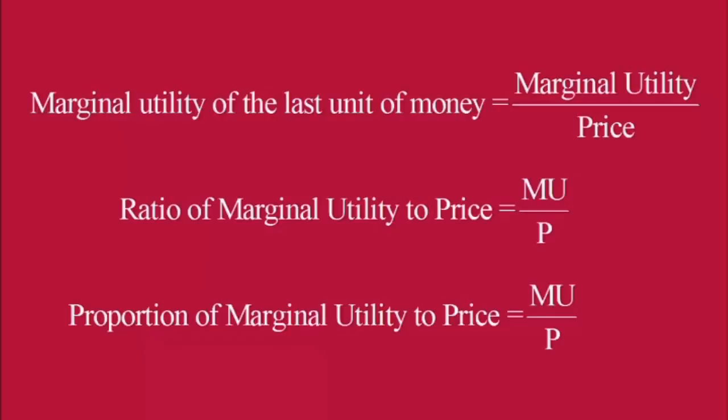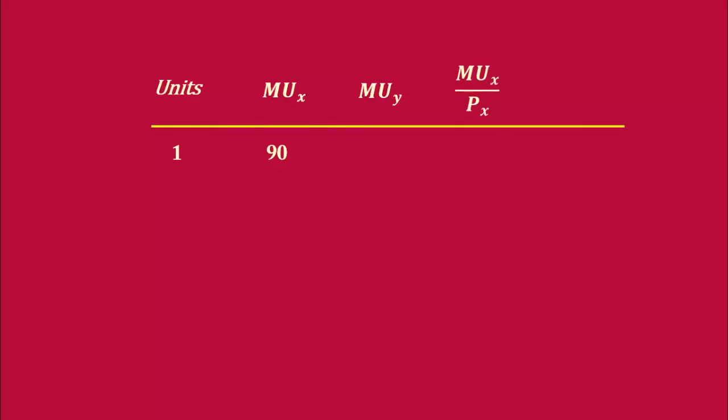When the consumer consumes the first unit of Good X, its marginal utility is 90 units and its price is Rs.10. Marginal utility is to be divided by its price to find MUX by PX — 90 divided by 10 equals 9 units. Now, the consumer consumes the first unit of Good Y. Its marginal utility is 50 units and its price is Rs.5. In its case, the marginal utility of the last unit of money is MUY by PY, that is 50 by 5, which equals 10 units.